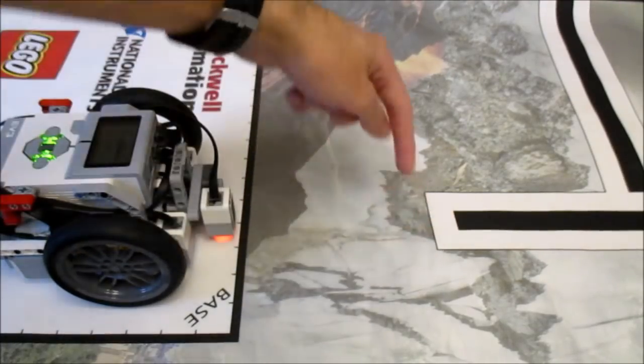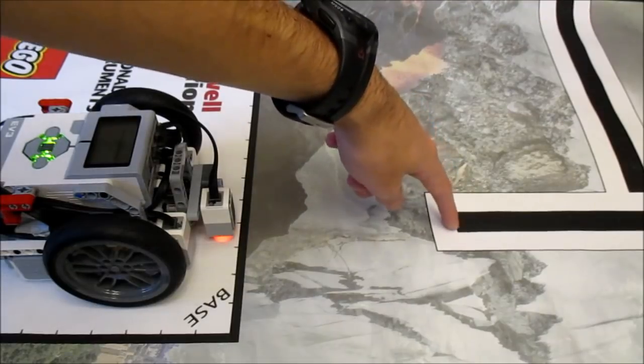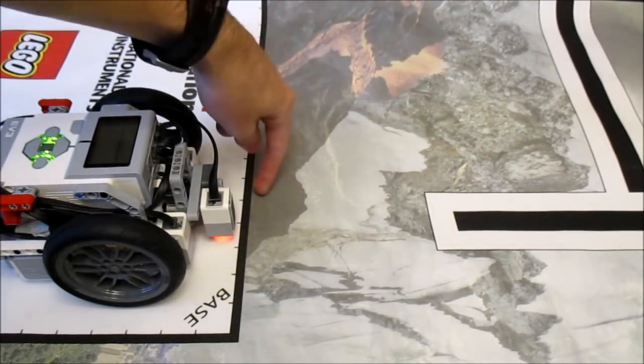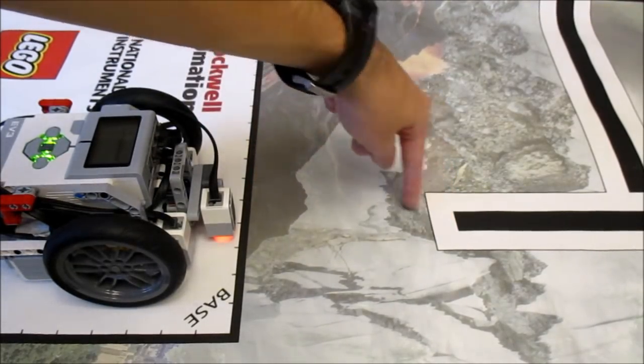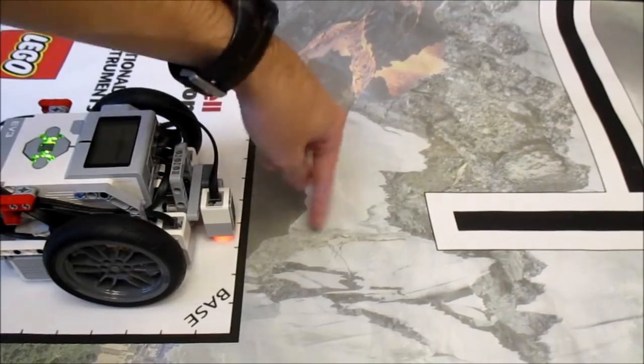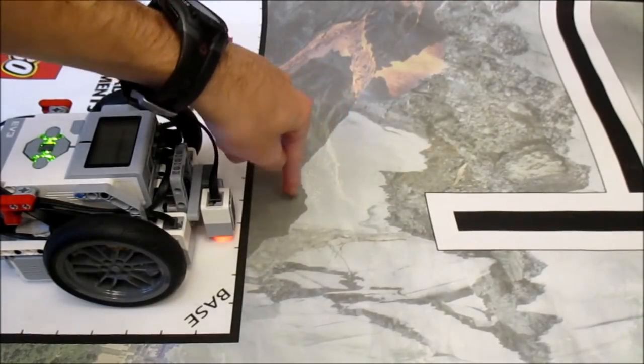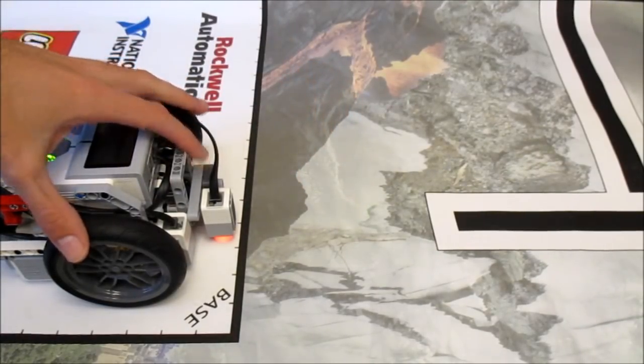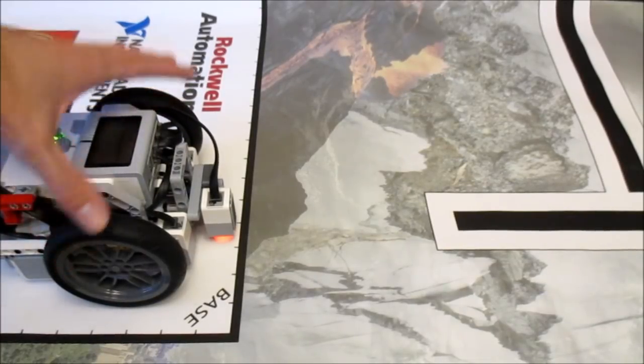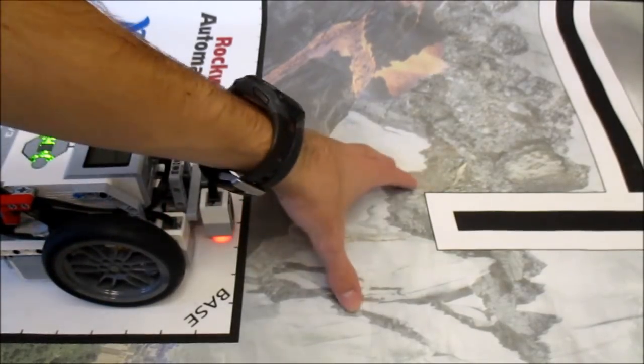But the problem is this line does not start directly at your base. You have to traverse this area over here which contains different gradients of gray which may or may not interfere with your line follower. So you need to get your robot out of the base, over this area, and onto the line so you can follow it.